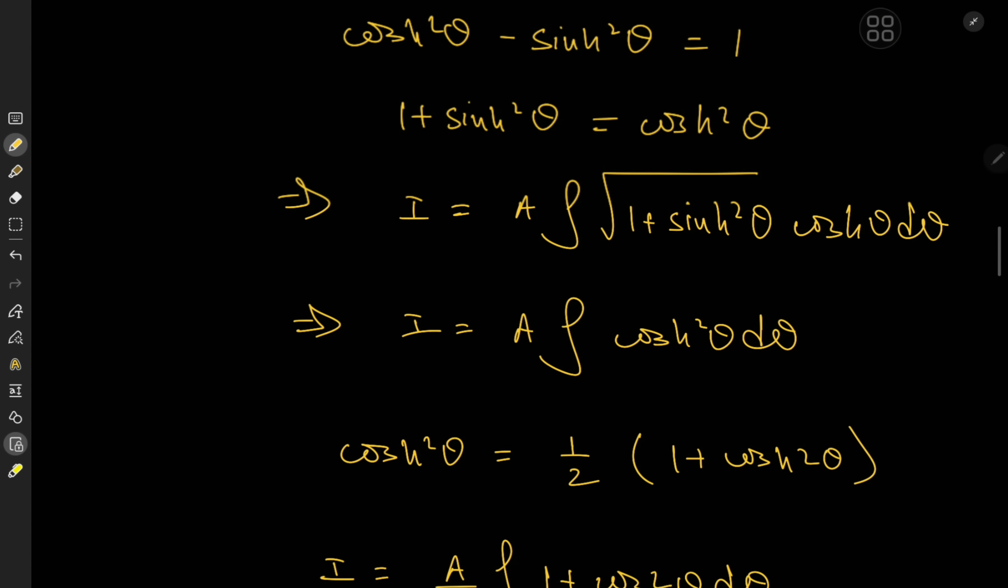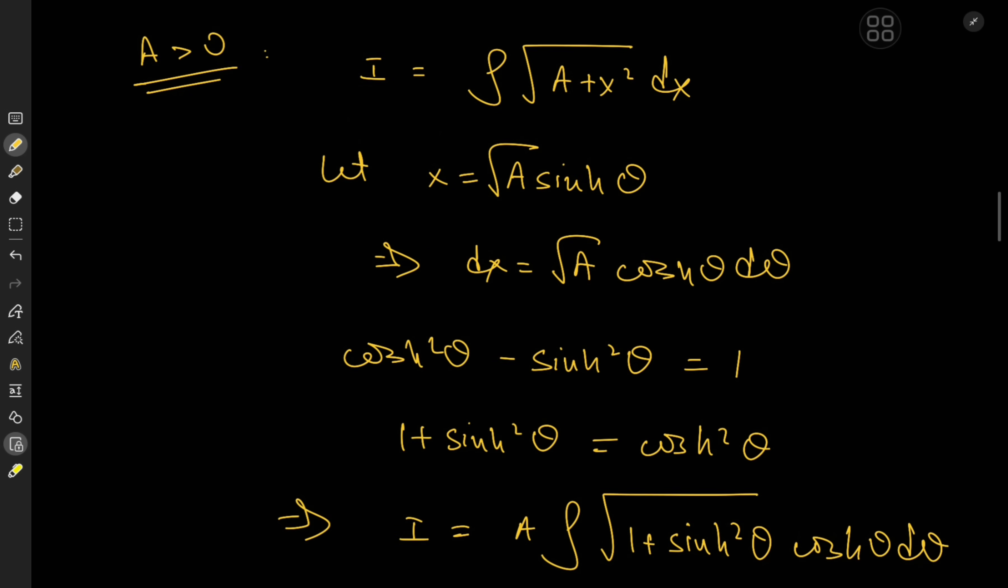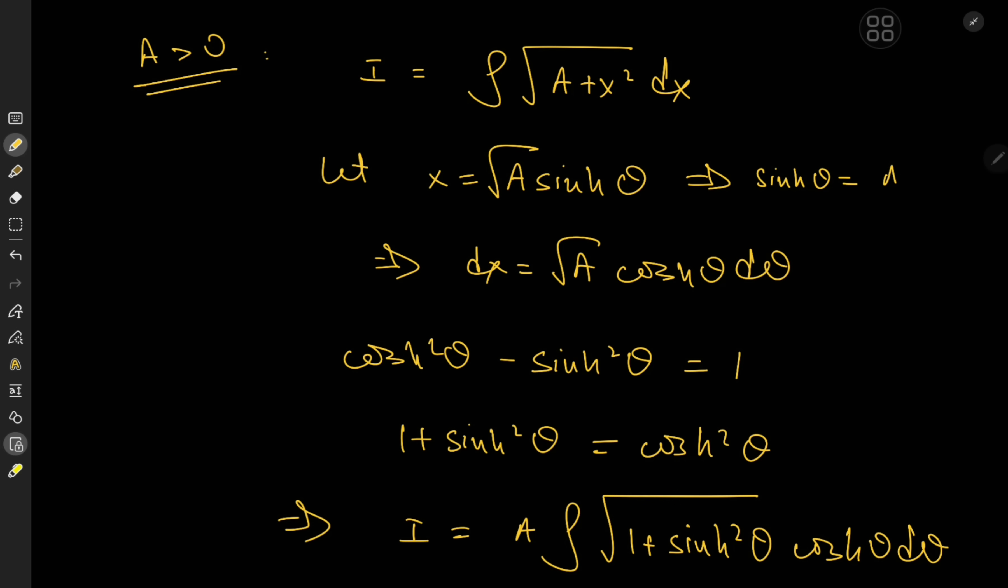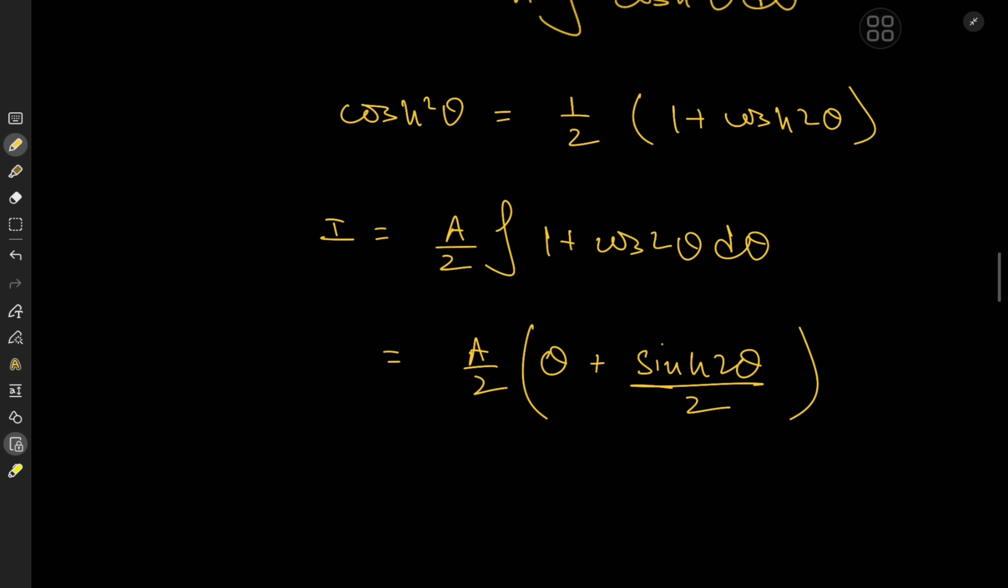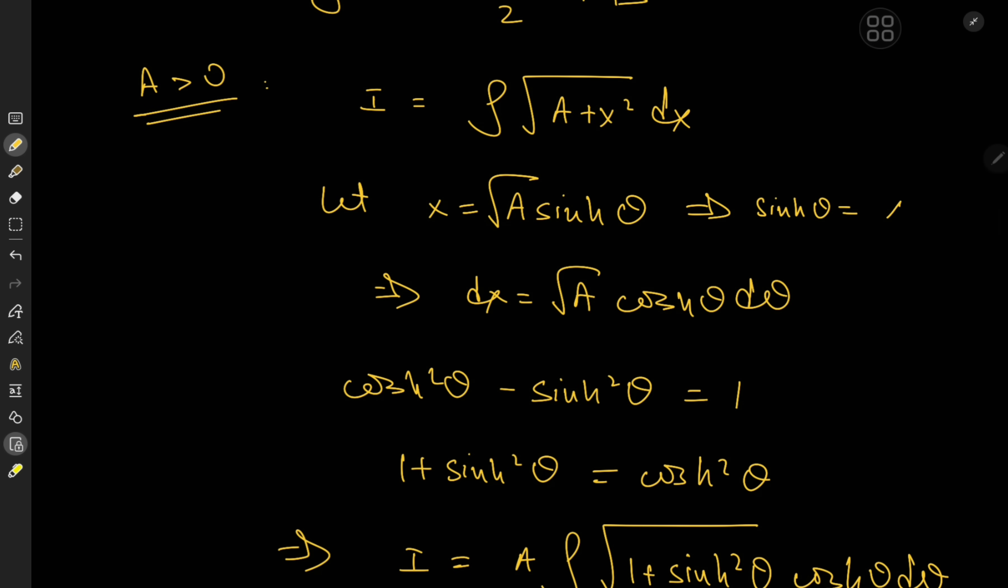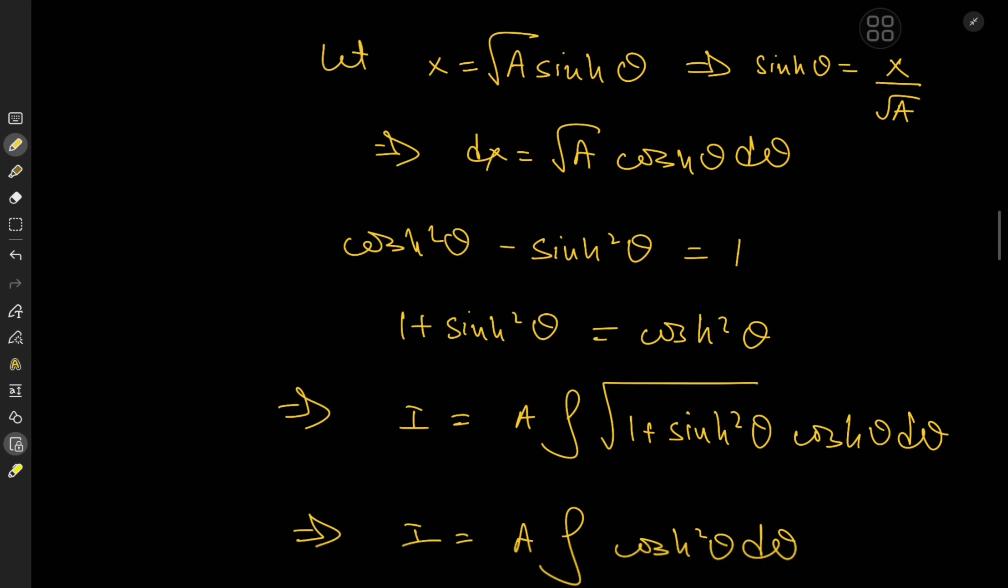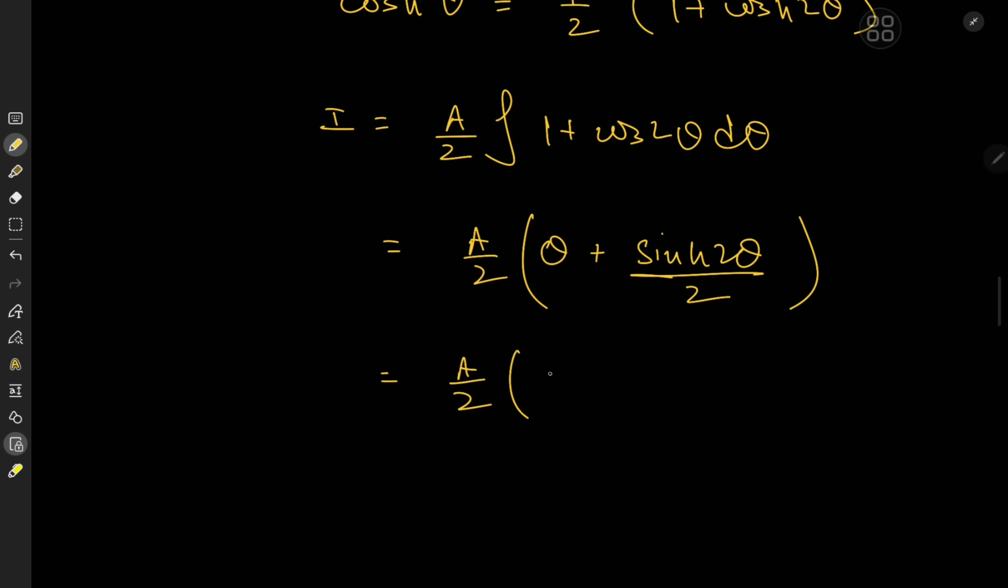And of course we now have to transform back into the x realm. So sinh theta is actually just x/√a. That means theta equals the arc sinh of x/√a. We have a/2 times arc sinh of x/√a plus sinh 2theta, which is of course 2 sinh theta times cosh theta over 2, which cancels out, leaving behind sinh theta times cosh theta. And we know how to express these in terms of x.